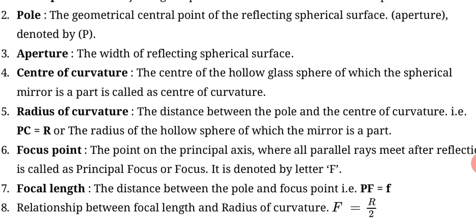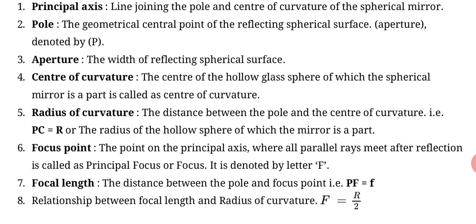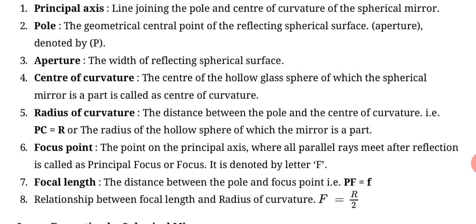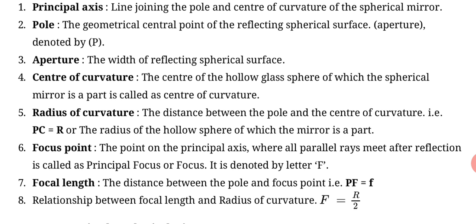Second, pole: the geometrical central point of the reflecting spherical surface denoted by P is called pole. The central point of the reflecting spherical surface is called pole.